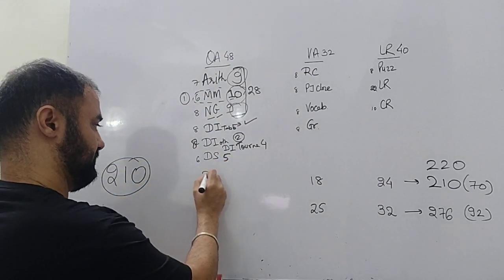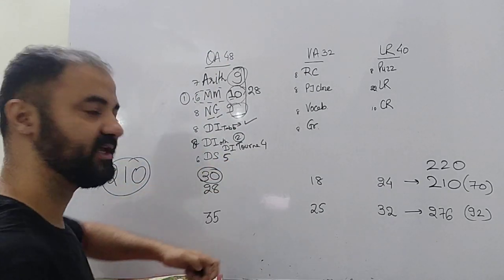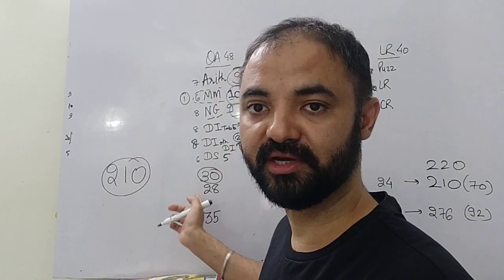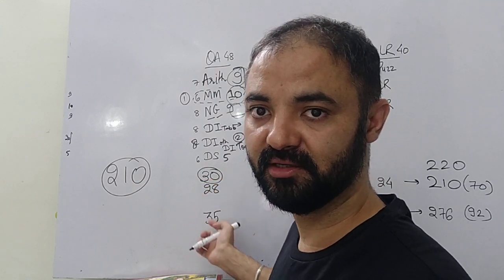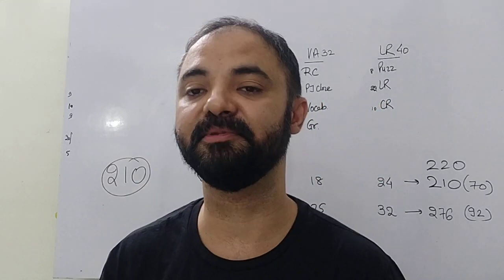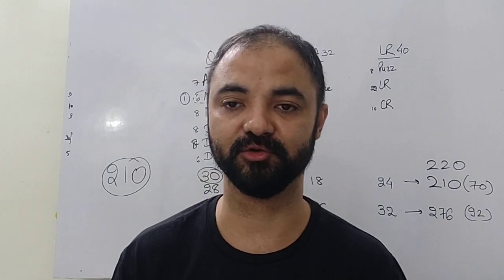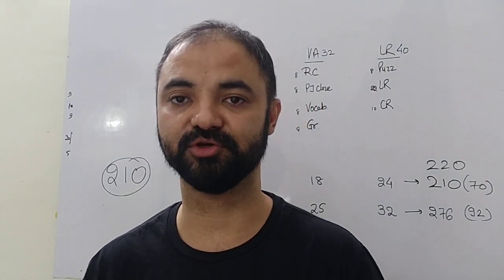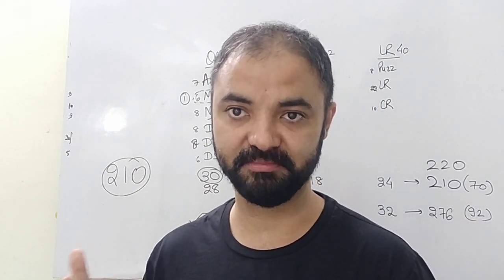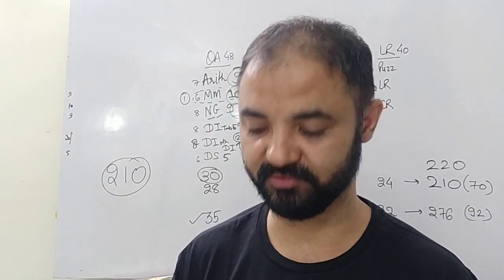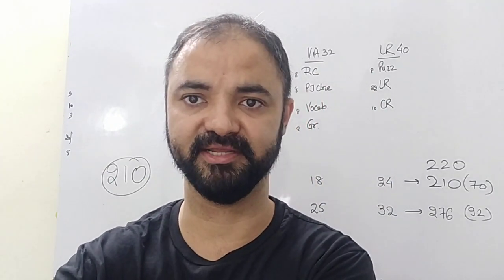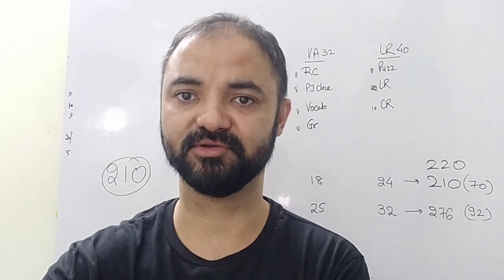We'll keep the target as 30 because 220 should be your target. So if you want 220, 30 marks you need from quant. For that I have to attempt around 35 questions. Obviously because there is no negative marking, I have to solve every question. But you have to make sure that you attempt at least 35 questions - good attempts and out of them 30 correct with probably 80% accuracy, which is a decent accuracy to expect.